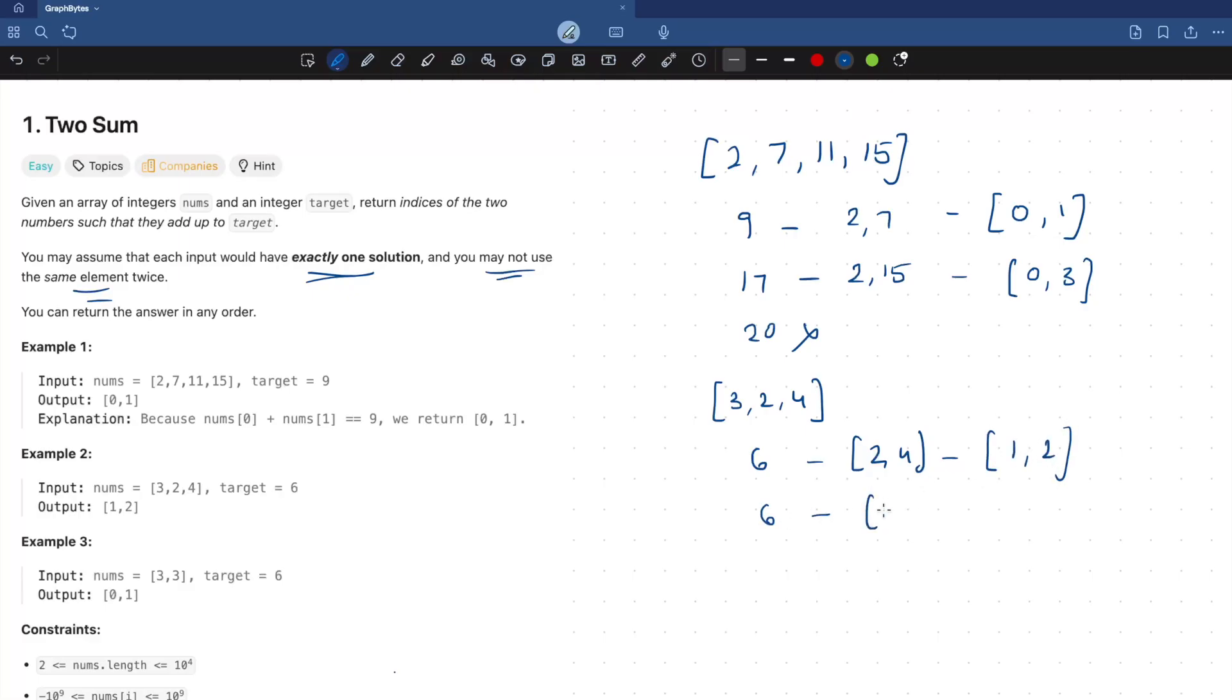For 6, we can't use 3, 3, it would mean using the same element twice. So this won't be the answer. And even 8, 8 is also an invalid test case because 4, 4 is not a possible solution. For 7, it would be 3, 4 which would be 0, 2, the indices of it would be 0, 2.